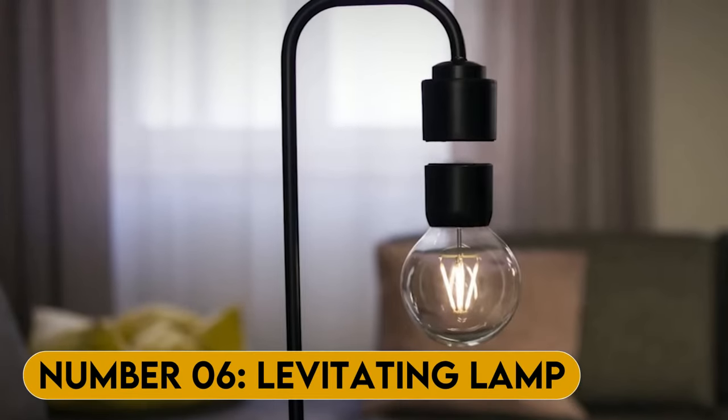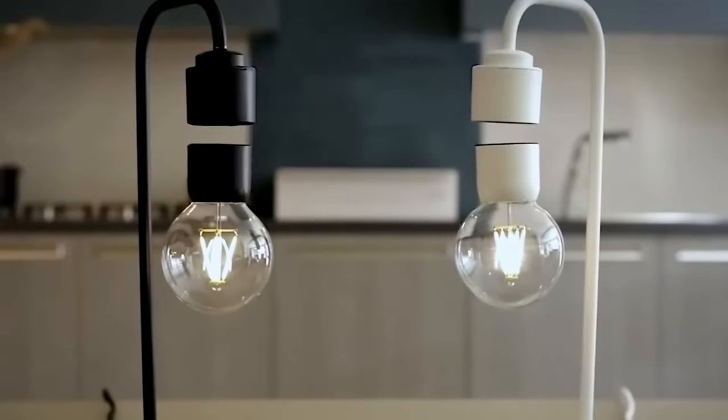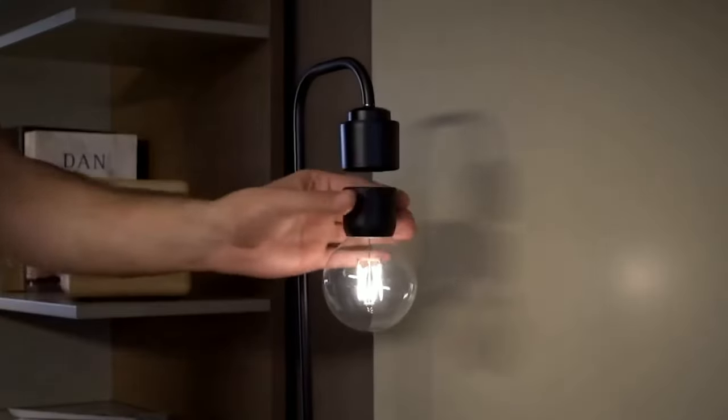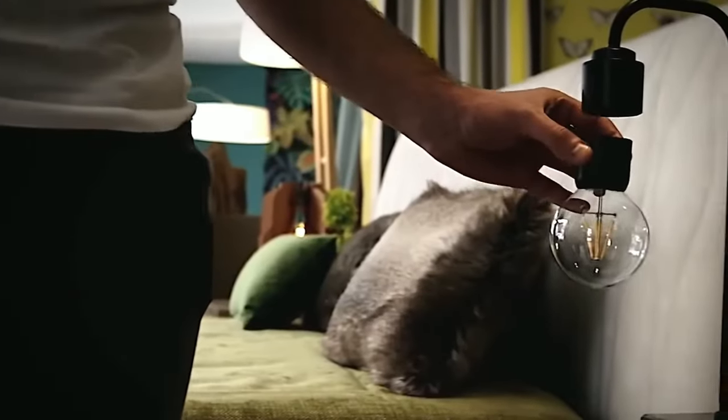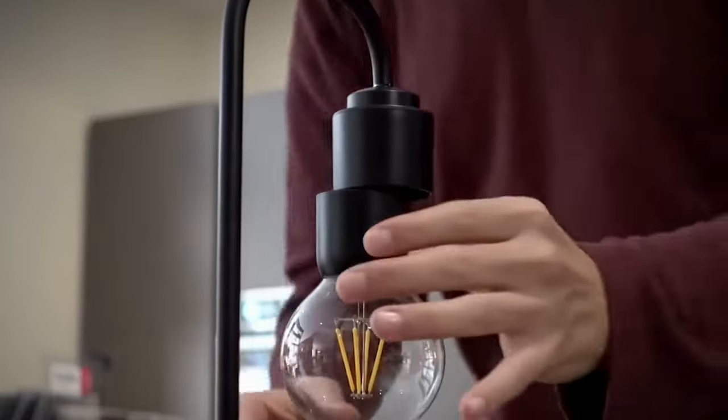Number 6. Levitating Lamp. This lamp looks like it's straight out of a sci-fi movie. The wooden base looks sleek and modern. And the lamp itself is suspended in mid-air. Yes, you heard me right. It's levitating. I mean, who wouldn't want a levitating lamp in their room? It's like having a piece of the future in your hands. Or, well, in your room. What do you guys think?